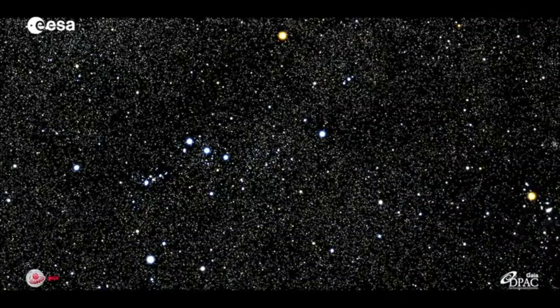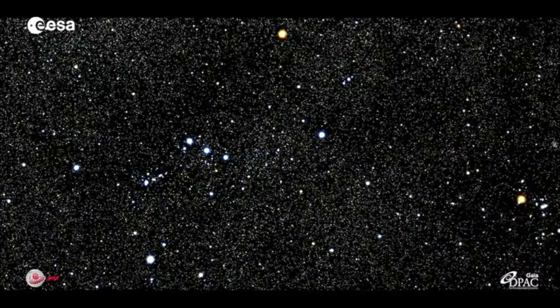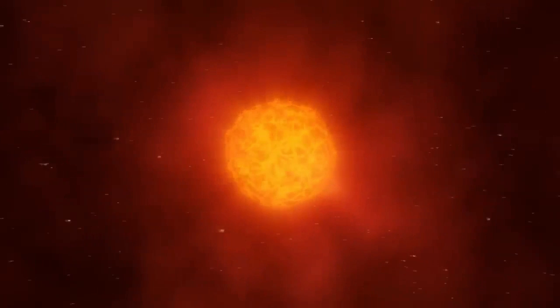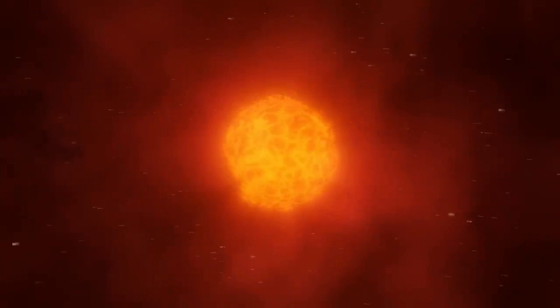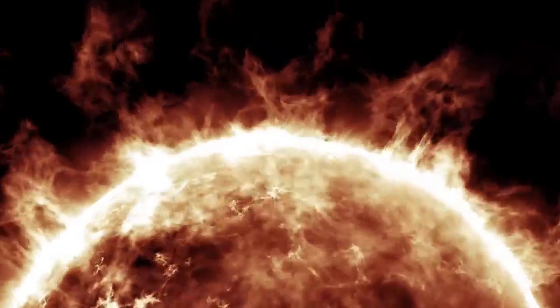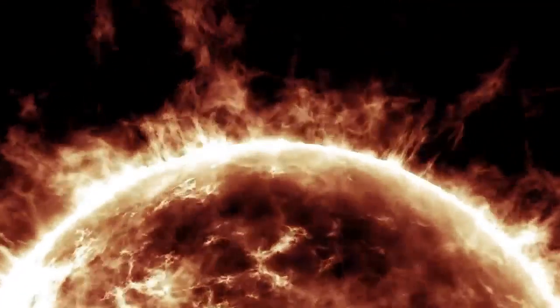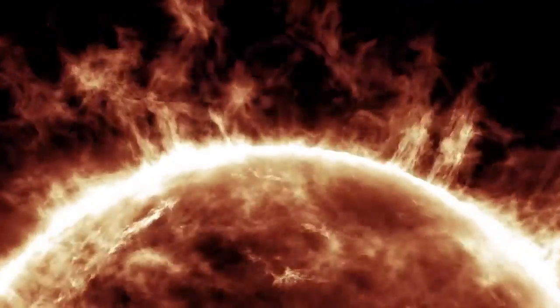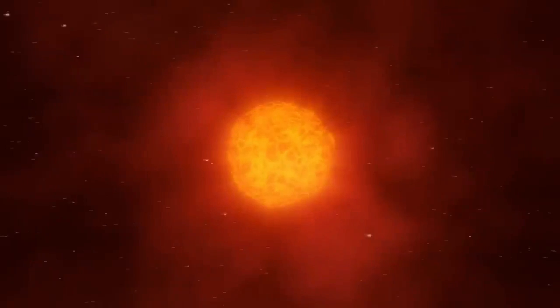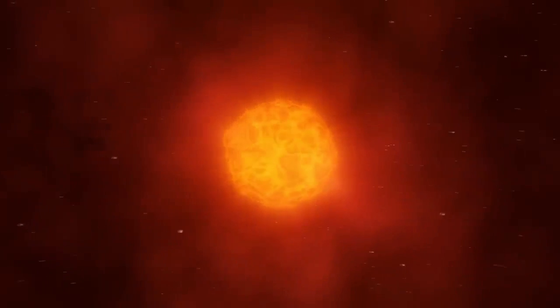Betelgeuse is one of the largest known stars and is a bright red dot that marks the shoulder of Orion. This star is a dying red giant with a diameter approximately 950 times larger than our sun, and whether today, tomorrow or 100,000 years from now, it will explode, providing a celestial spectacle for humanity. In 2019, Betelgeuse began to dim dramatically, hinting that it might have reached the end of its life.